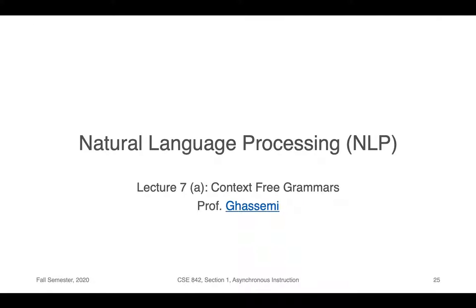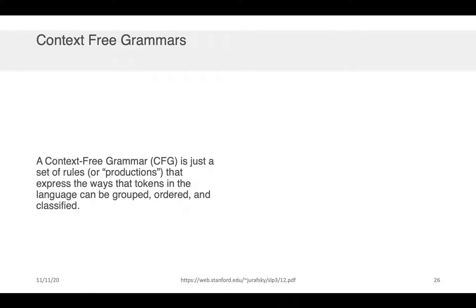Hi everyone, Professor Gassimi here. In this component of the lecture we're going to be speaking about context-free grammars. Now a context-free grammar is just a set of rules, or sometimes referred to as productions, that express the ways that tokens in a language can be grouped, ordered, and classified into a hierarchical grammatical structure.